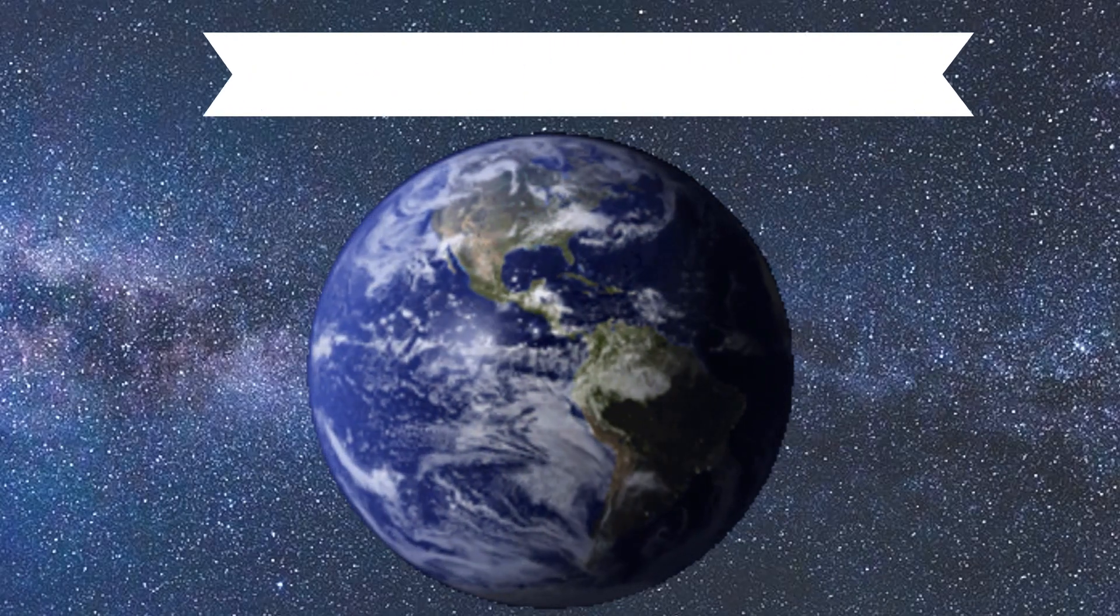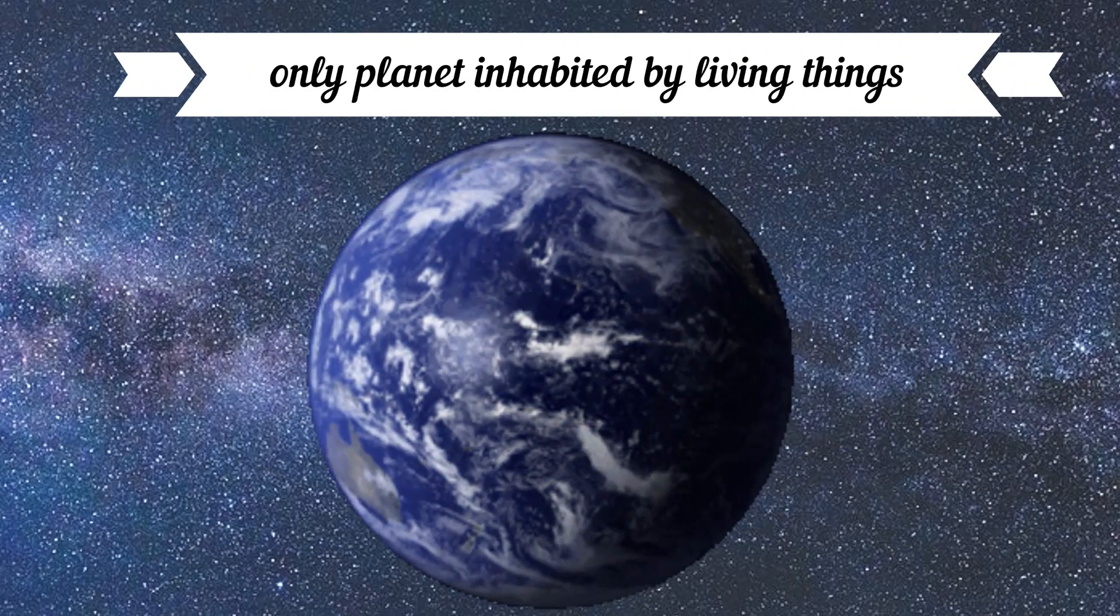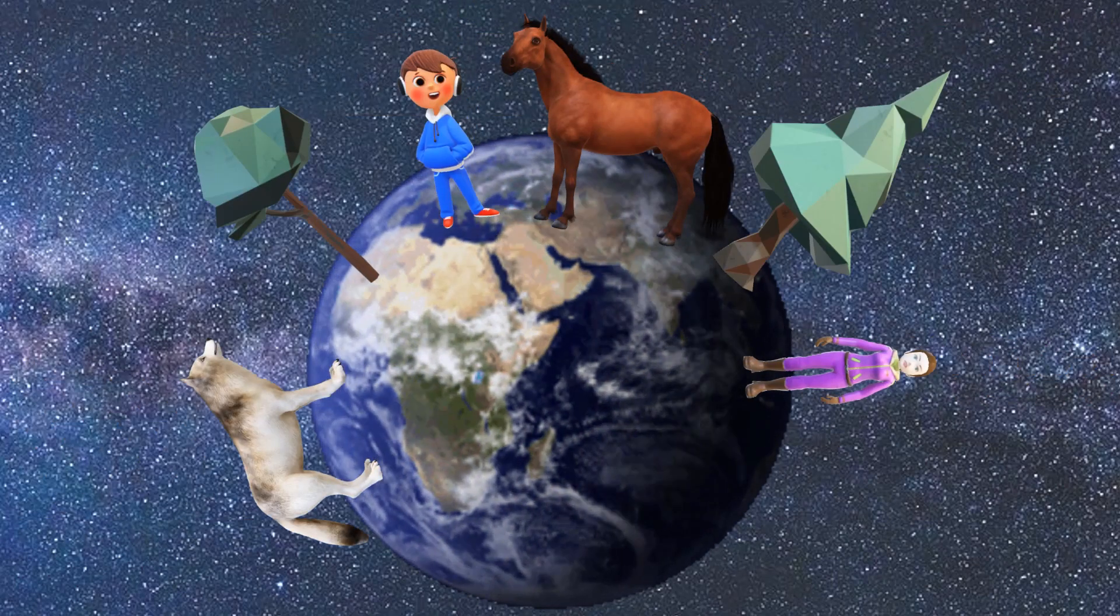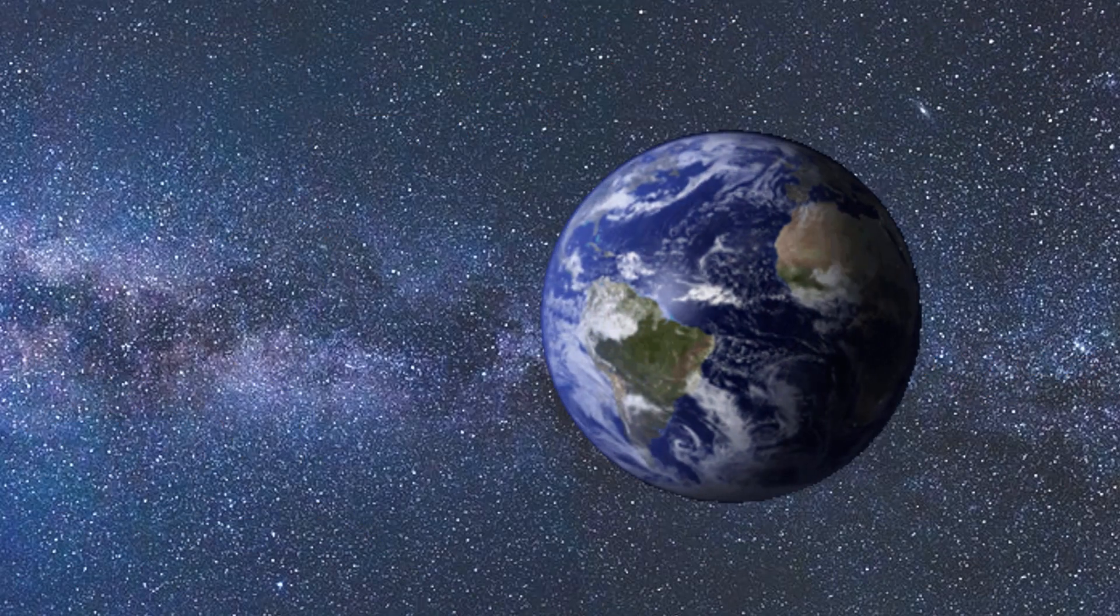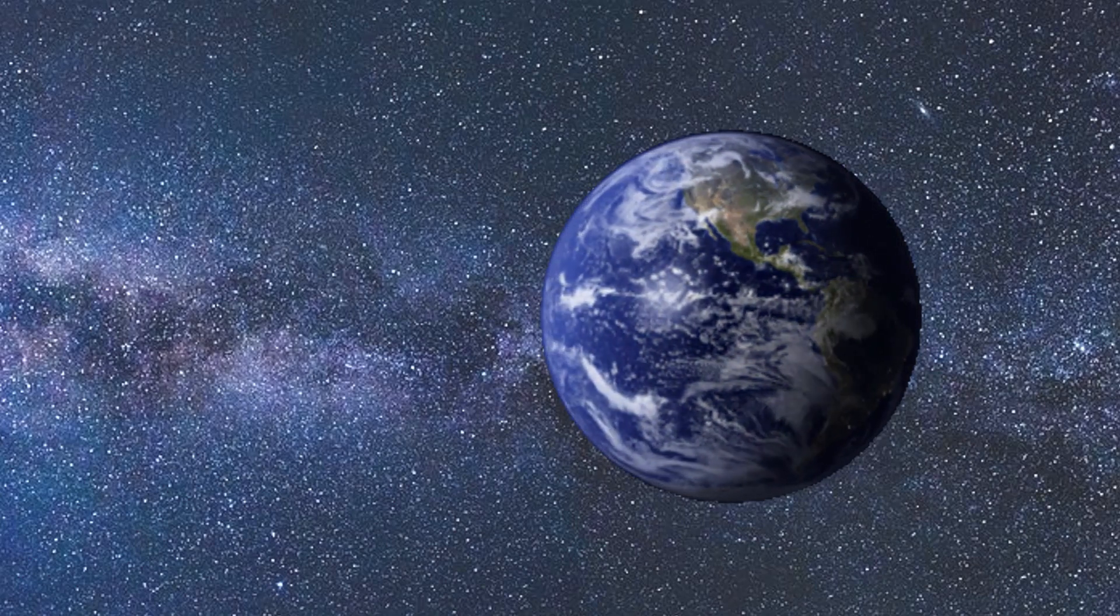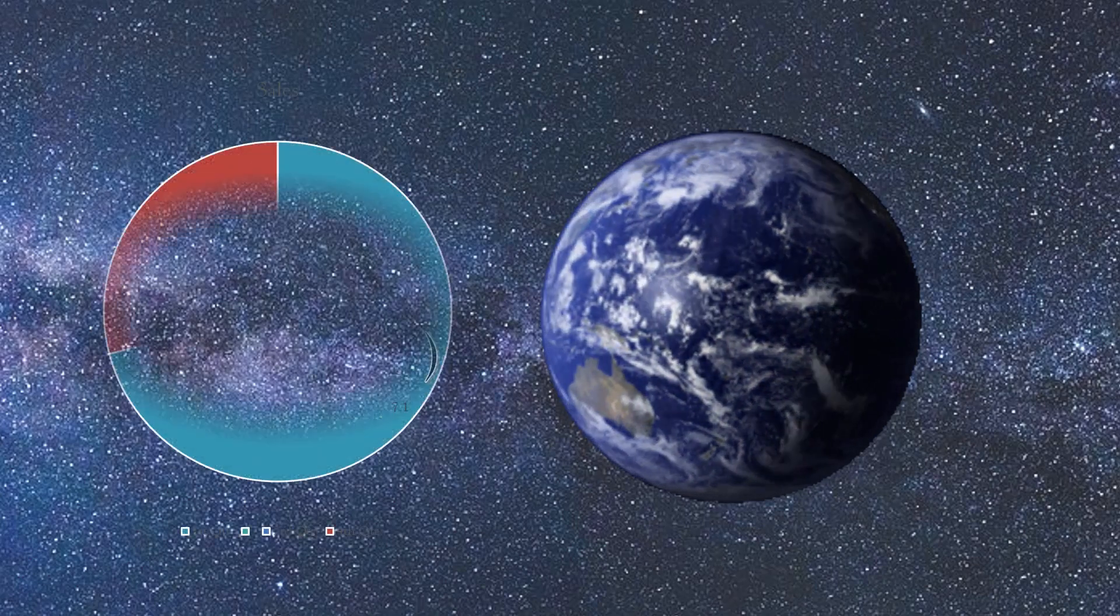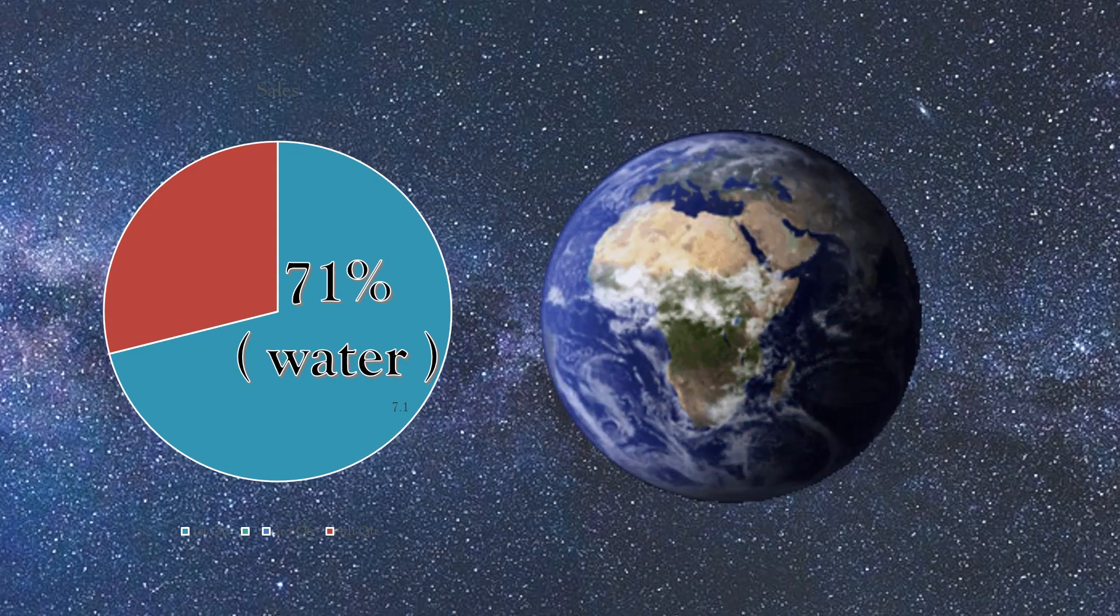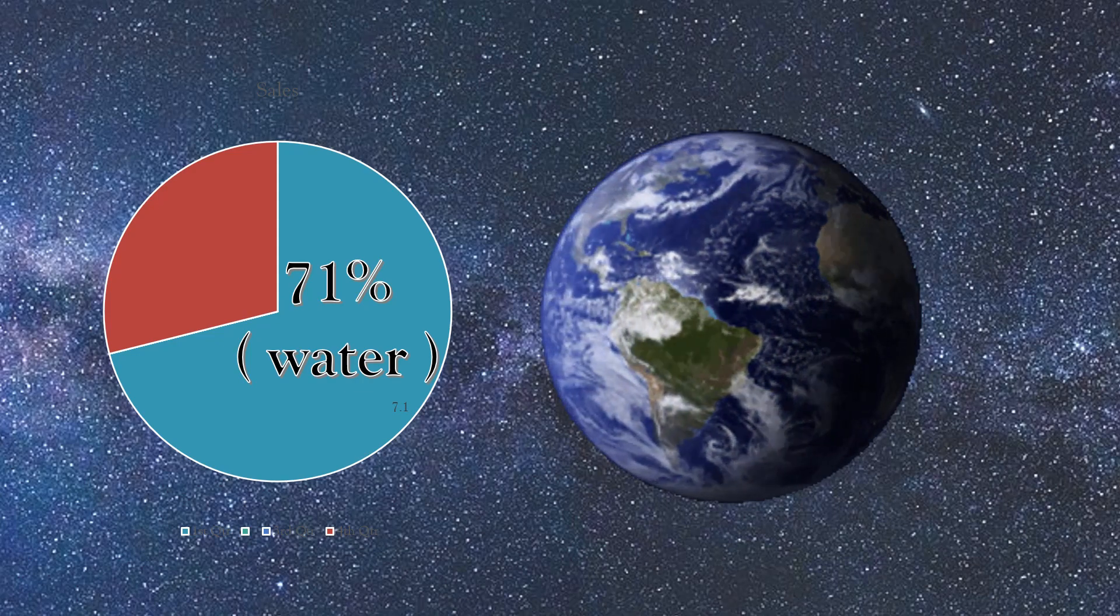Earth is the only planet in the universe that is inhabited by living things. More than 71% of the Earth is covered in water while the other 29% is land.